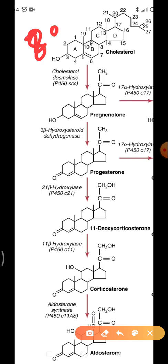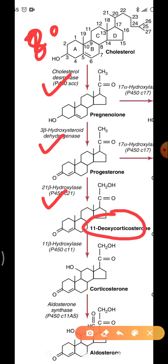Cholesterol is converted into pregnenolone by the enzyme cholesterol desmolase. This is the rate-limiting step in steroid synthesis and is regulated by adrenocorticotropic hormone (ACTH) and angiotensin II. Pregnenolone changes into progesterone by the enzyme 3-beta-hydroxysteroid dehydrogenase. Progesterone changes into 11-deoxycorticosterone by 21-beta-hydroxylase. This 11-deoxycorticosterone is also a potent mineralocorticoid, with 1/30 of the activity of aldosterone. 11-deoxycorticosterone then changes into corticosterone by 11-beta-hydroxylase, which has only slight mineralocorticoid activity.